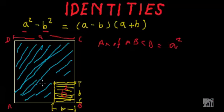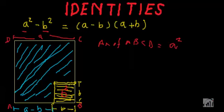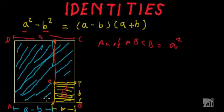Now let's see what this length is. This length is A - b, because the total length was A and we have removed this b to construct the tiny square of area b². So the remaining length will be A - b. Let us name this point as O and extend this line till here.